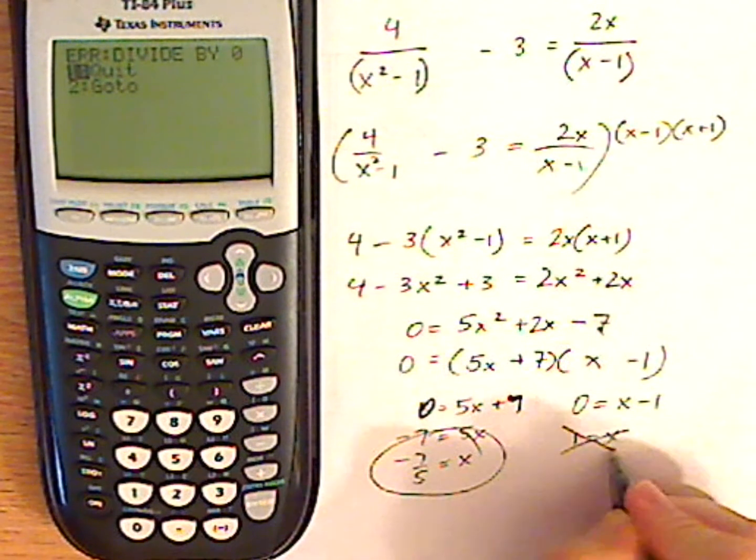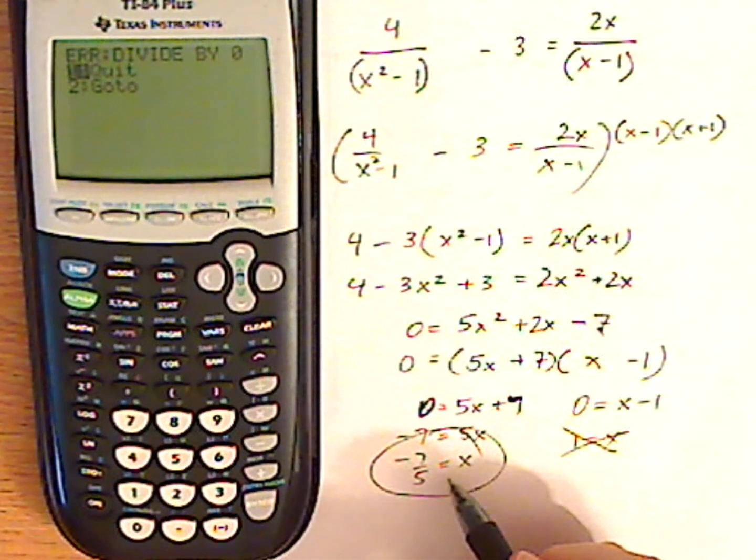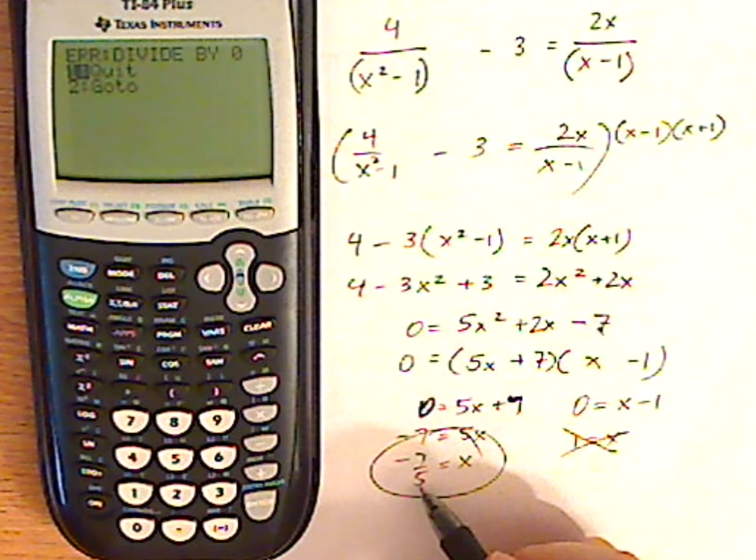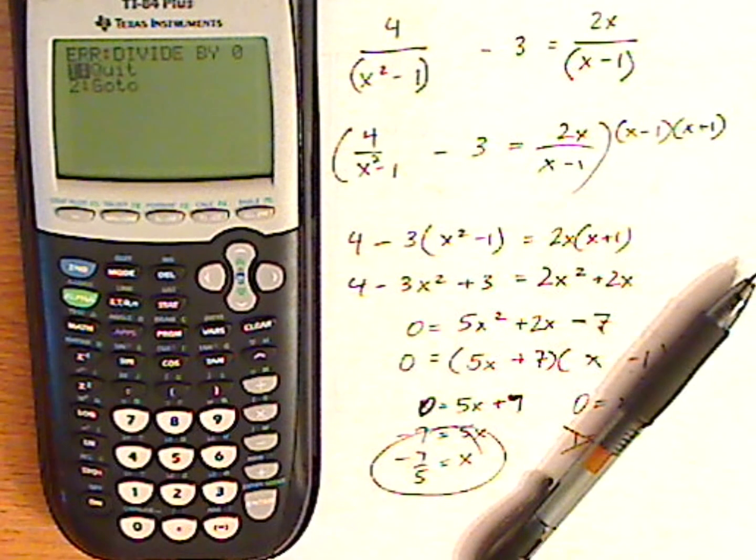So, positive one is not a solution. Your only solution for this problem is x equals negative seven-fifths. And that's it.